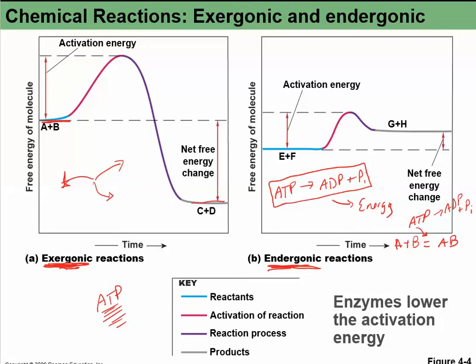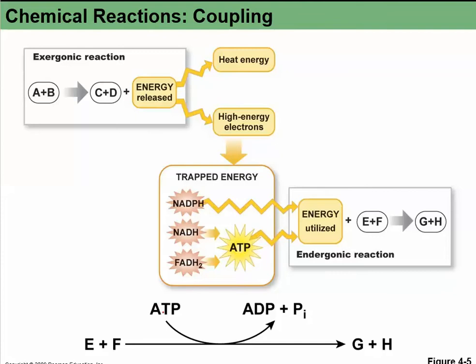We get energy from ATP to drive reactions from reactants to products. We also get energy from high energy electron molecules — we'll talk about those shortly. The purpose of having those high energy molecules is ultimately to make ATP. ATP is ultimately what we're after, and today we're going to talk about how to actually make it.